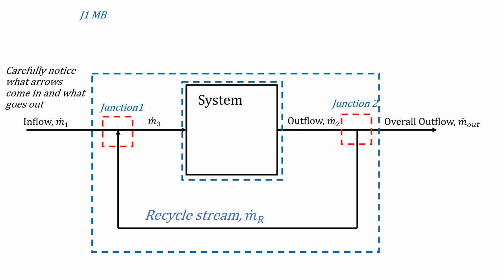So carefully notice what arrows are coming in and out of the system. So if you can see, we have mass 1 coming in, the recycle stream coming in, and ṁ_3 coming out. So if we write the equation for the mass balance, it's going to be ṁ_1 plus ṁ of the recycle stream equals ṁ_3. And notice how this time we use the recycle stream in the junction. Remember, the junction is sort of like a small system that we're looking at. And for the second junction where the stream is coming out, we have what's going into the system is ṁ_2. And what's coming out is the recycle stream and the outflow.